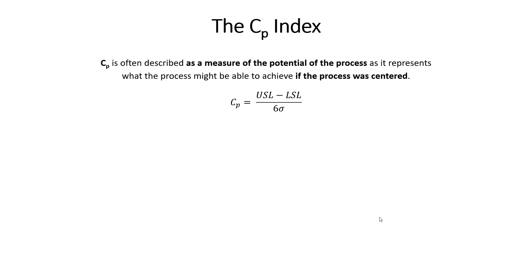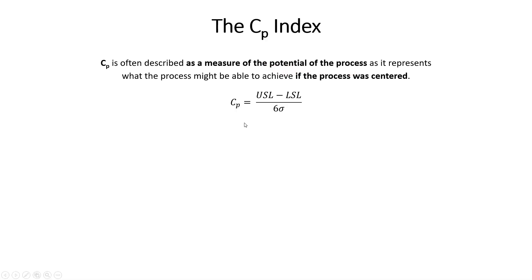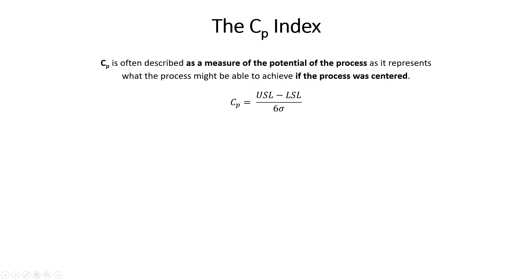Now I want to introduce the most basic index for calculating process capability: CP. CP is often thought of as a measure of the potential of your process — what it might be able to achieve if the process were centered. Most process capability studies don't even report the CP value because it's really about potential, not actual performance.